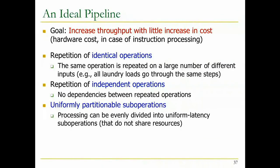The third requirement for an ideal pipeline is uniformly partitionable sub-operations - processing can be evenly divided into uniform latency sub-operations, a balanced pipeline. Fetch takes the same amount of time as decode, the same as the next stage, and so on. If for some reason decode is much faster and doesn't need the entire clock cycle, you're wasting that clock cycle. You didn't uniformly partition your sub-operations, so you waste your clock cycle in that stage - the pipeline is not balanced. This is essentially a problem of balancing critical paths.